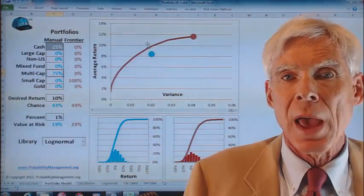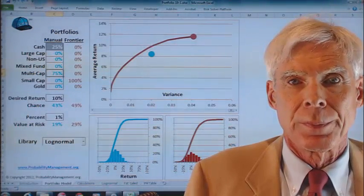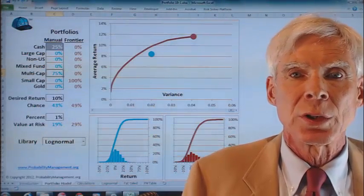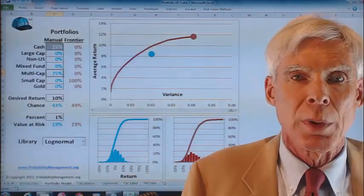This has a higher average return and lower risk. Every time the portfolio is changed, 1,000 trials for each of the seven assets are instantly run through the model.